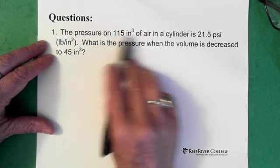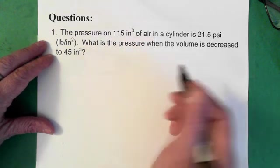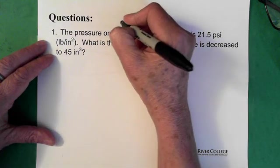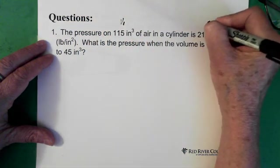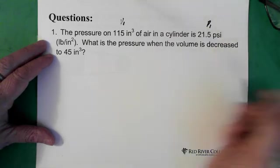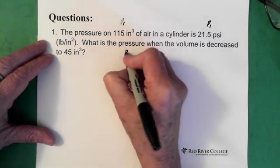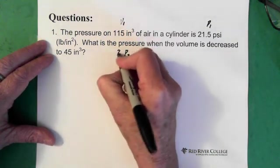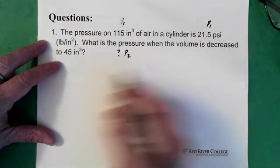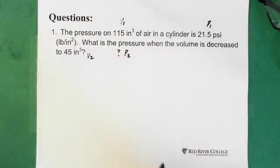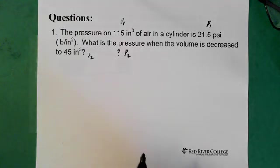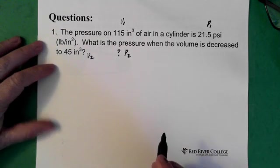So it helps to just see what we're looking for here. So this is our volume 1. This is our pressure 1. And we're looking for pressure 2, so that's our question mark. And we have volume 2. So now, not thinking about Boyle's Law, but just thinking about inverse proportion and how we should set this up.